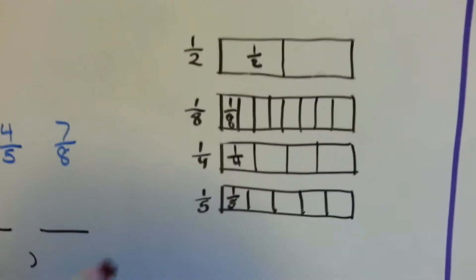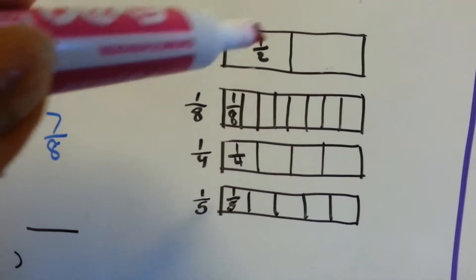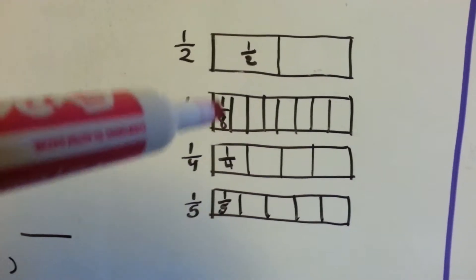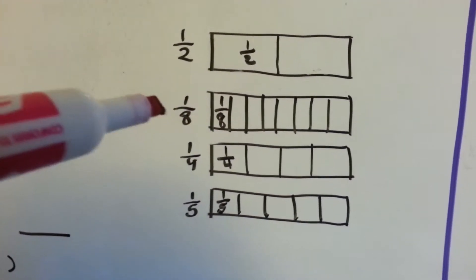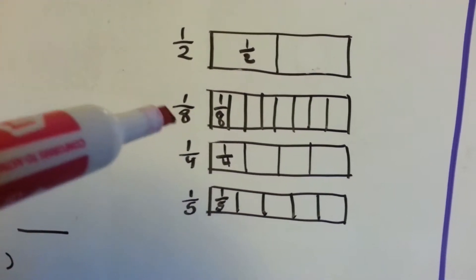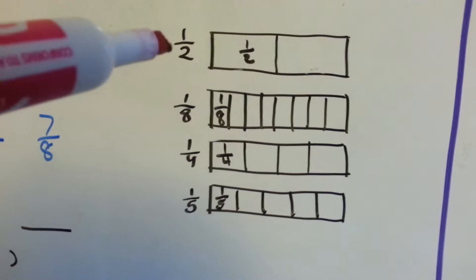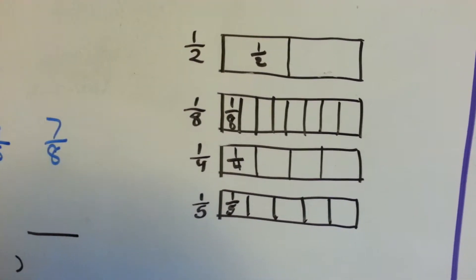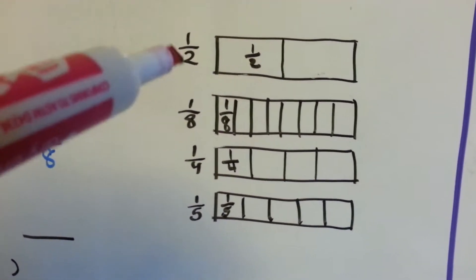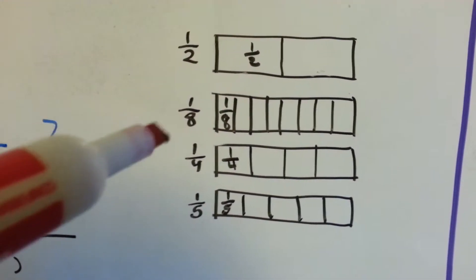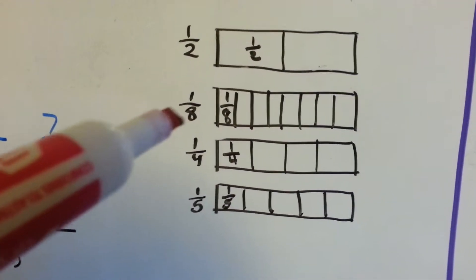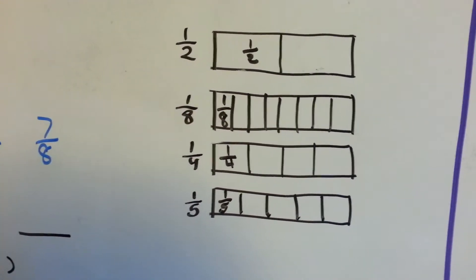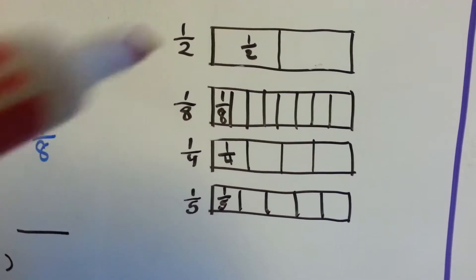Let's look at this. A half is this whole area here, where an eighth is just this tiny area. So even though it's got a much bigger number on the bottom than this half, the half is bigger. The smaller the denominator, the bigger the piece; the larger the denominator, the smaller the piece.